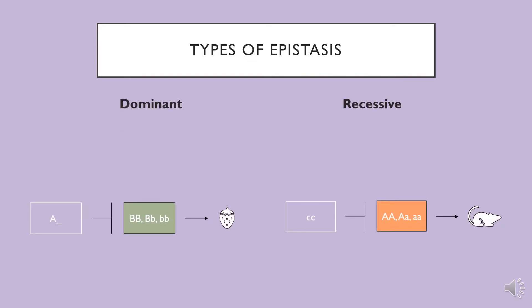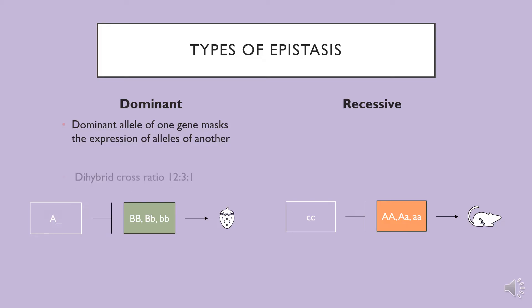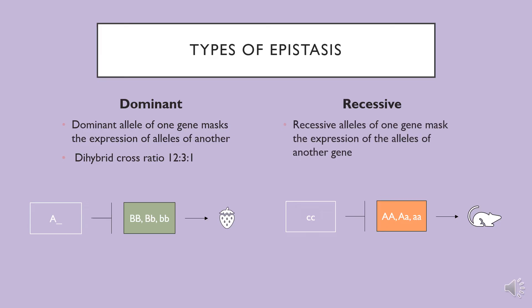In dominant epistasis, the dominant allele of one gene masks the expression of the alleles of another. This interaction produces deviations from normal Mendelian ratios, and specifically we see a shift from the typical 9 to 3 to 3 to 1 ratio in dihybrid crosses. In recessive epistasis, the recessive alleles of one gene mask the expression of the alleles of another gene, and we expect to see a 9 to 3 to 4 ratio of offspring phenotypes in a dihybrid cross where recessive epistasis is observed.